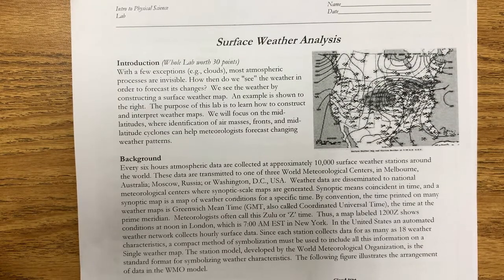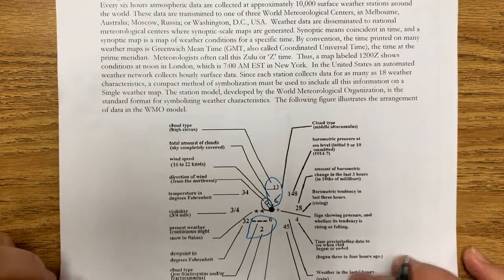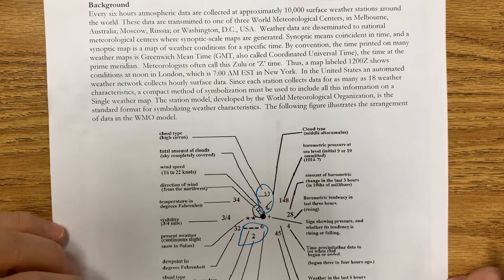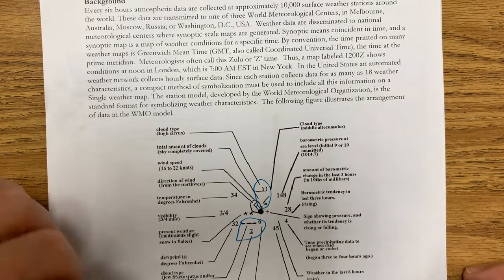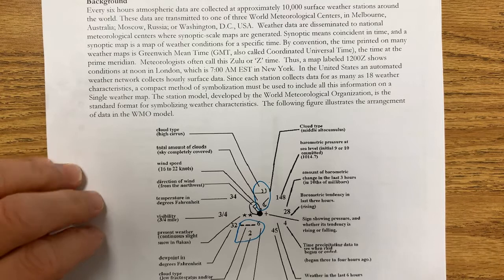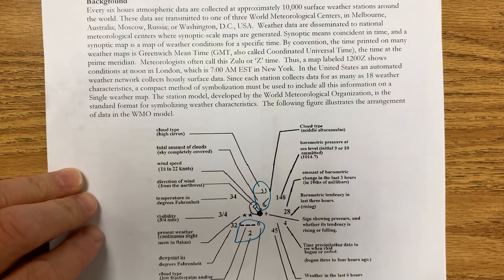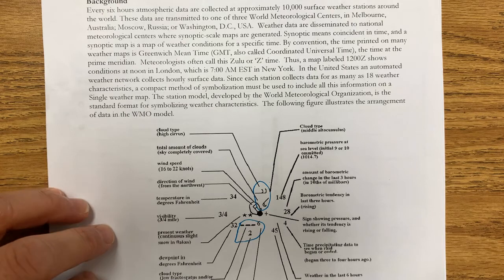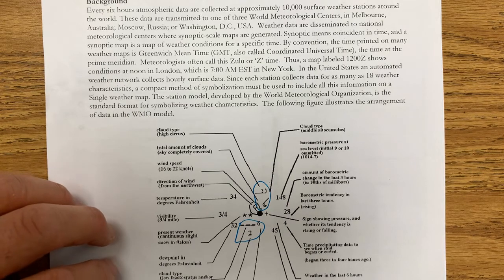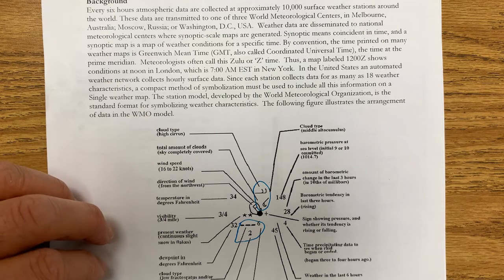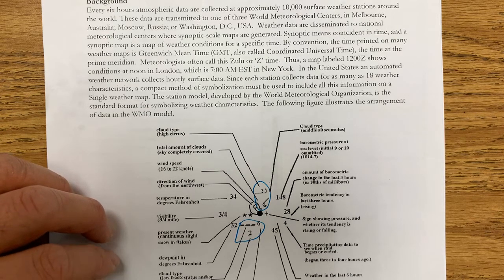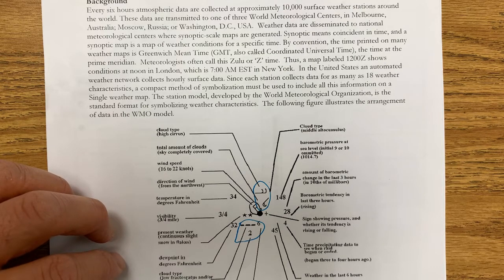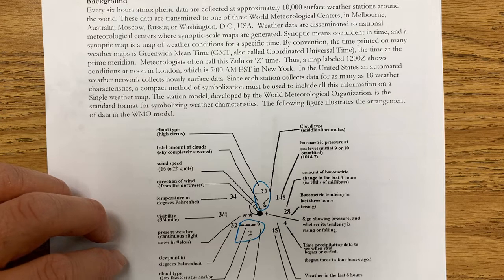A good way to visualize and help us predict weather in the future is to map those things out, so creating a surface weather map helps us understand better how our weather patterns are behaving and how we think they might behave in the future. Today it's all about predicting weather, looking at the devices we use to measure it, and how we construct a surface weather map. Weather stations throughout the world transmit weather data to the world meteorological centers located in Melbourne, Australia, Moscow, Russia, and Washington DC, and then that data is disseminated to different weather centers for interpretation.